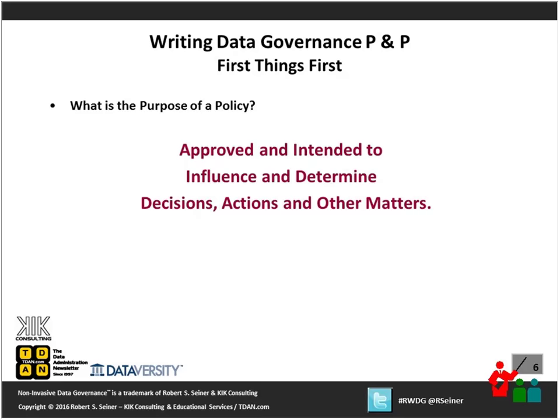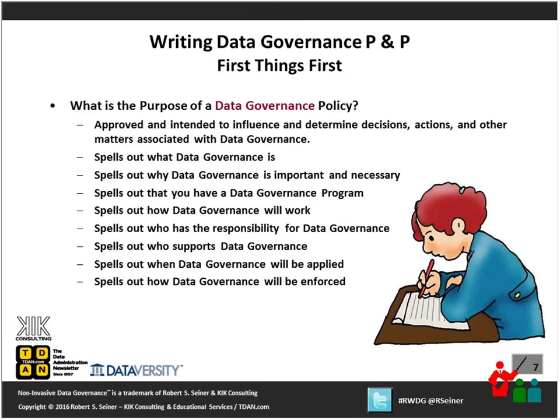What is the purpose of having a policy in the first place? Typically, policies are written and then approved, and they're intended to influence and determine decisions, actions, and other matters associated with whatever the policy is there to put in place. So we need to have it written well, approved, and its intentions will be to influence and determine decisions and actions associated with our data governance program. What's the purpose of specifically having a data governance policy? It is written and approved, and intended to influence and determine decisions, actions, and other matters associated with putting your data governance program in place.